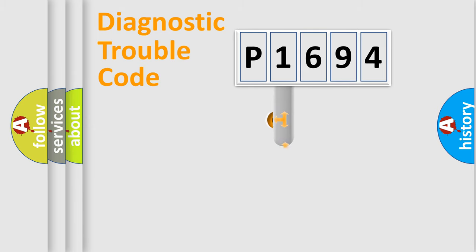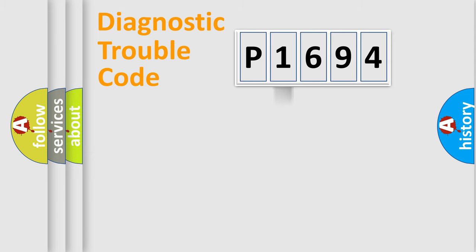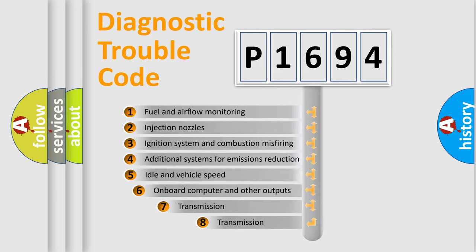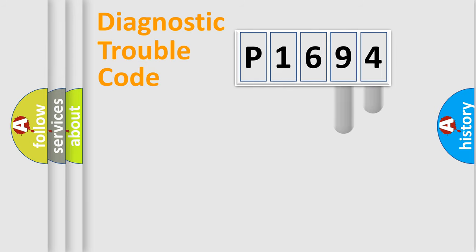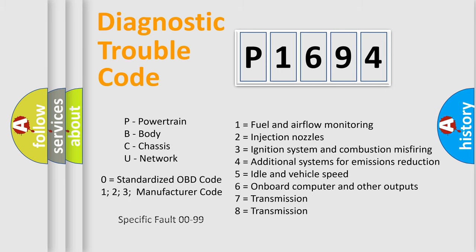This distribution is defined in the first character of the code. If the second character is expressed as zero, it is a standardized error. In the case of numbers 1, 2, or 3, it is a manufacturer-specific error expression. The third character specifies a subset of errors. The distribution shown is valid only for the standardized DTC code. Only the last two characters define the specific fault of the group. Note that such a division is valid only if the second character is expressed by the number zero.